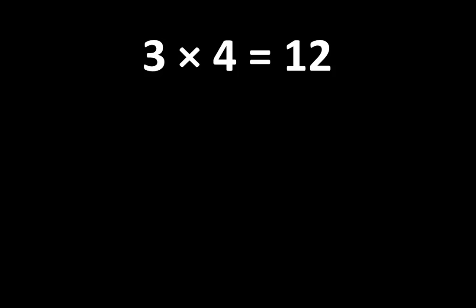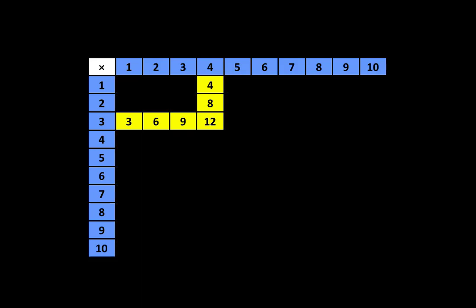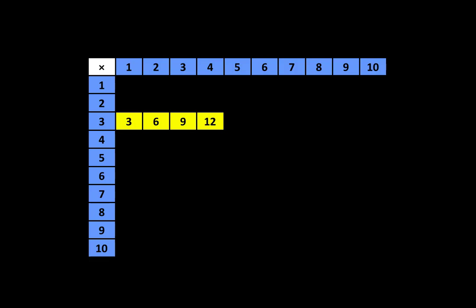3 times 4 is equal to 12, and there are many more important ideas. When we look on the multiplication table, we can see that 3 times 4 is equal to 12. 12 is a multiple of 3, and 12 is also a multiple of 4. In fact, if you look closely you'll find another connection: 12 is the fourth multiple of 3. I'll count the multiples of 3: 1, 2, 3, 4.